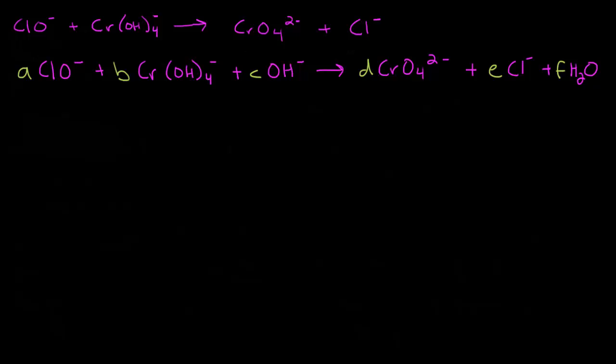Let's go ahead and add the oxidation states to each molecule. Starting with the A molecule: oxygen is usually in a minus two state, and since the overall molecule has a charge of minus one, chlorine has to be plus one. In the B molecule, hydrogen is plus one and oxygen is minus two, so that's minus one times four, giving minus four. To get a minus one for the entire B molecule, chromium has to be in the plus three state.